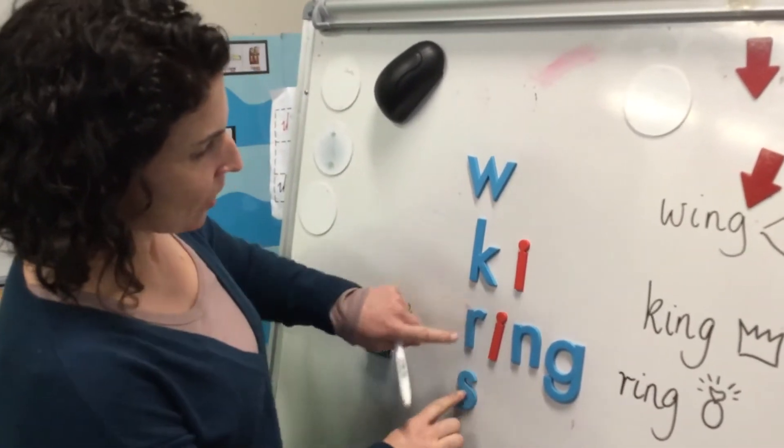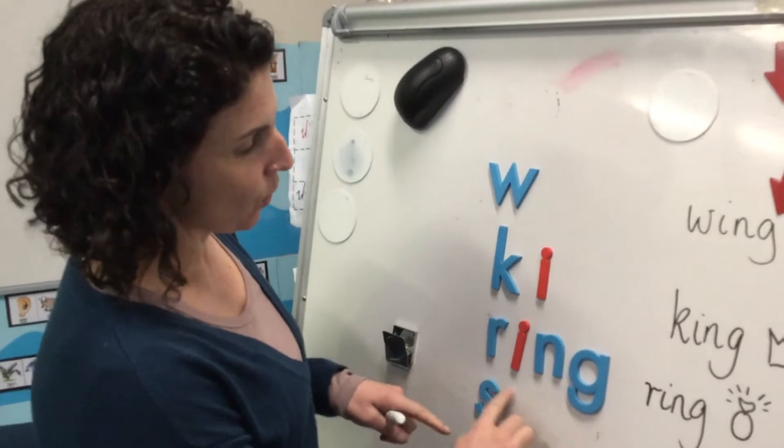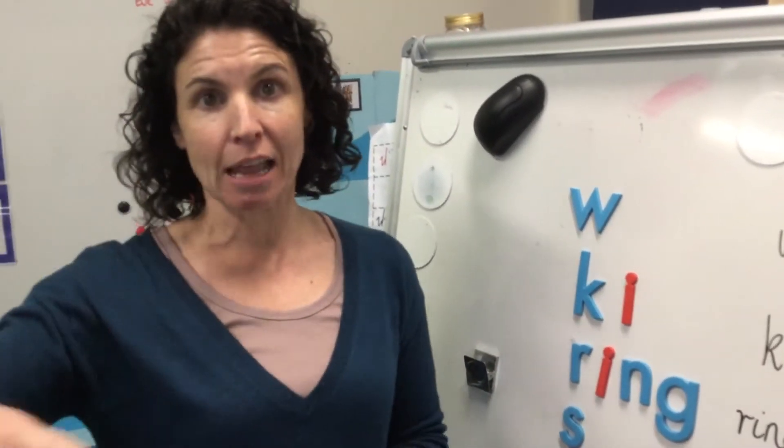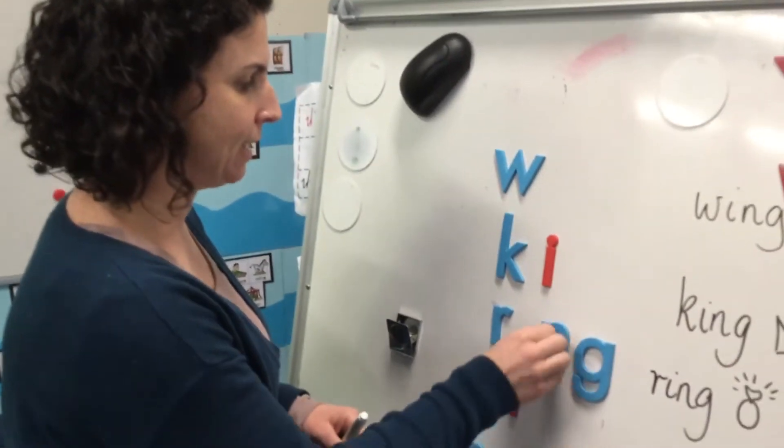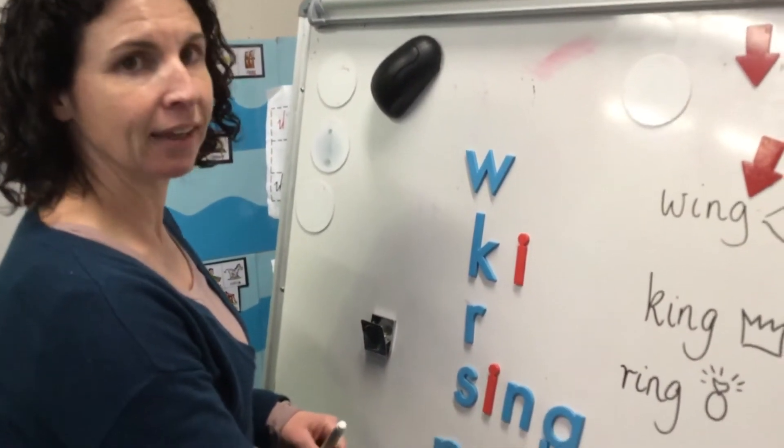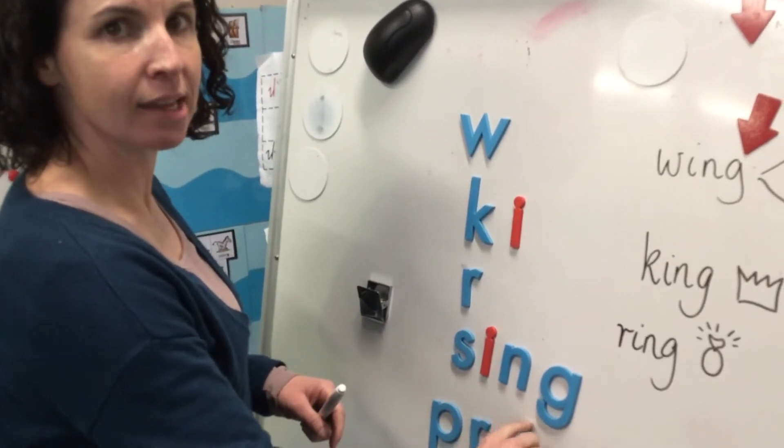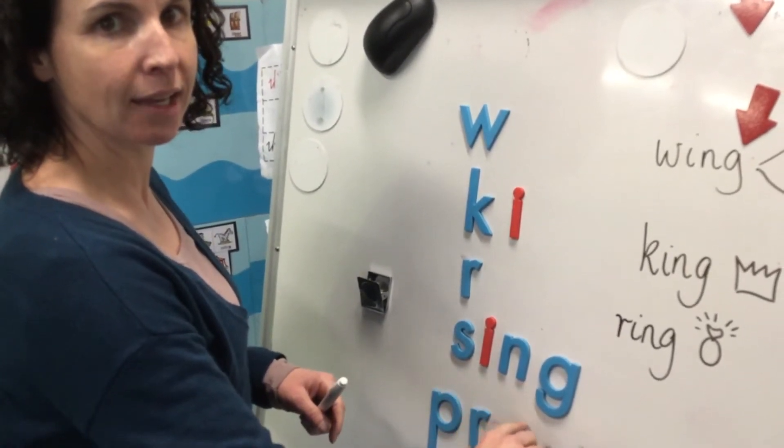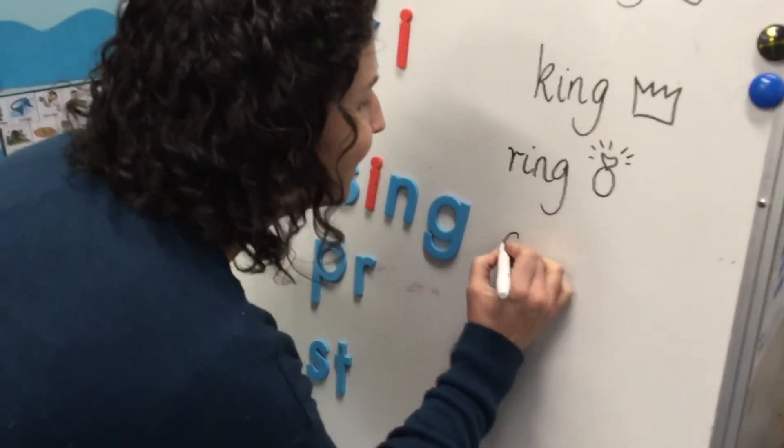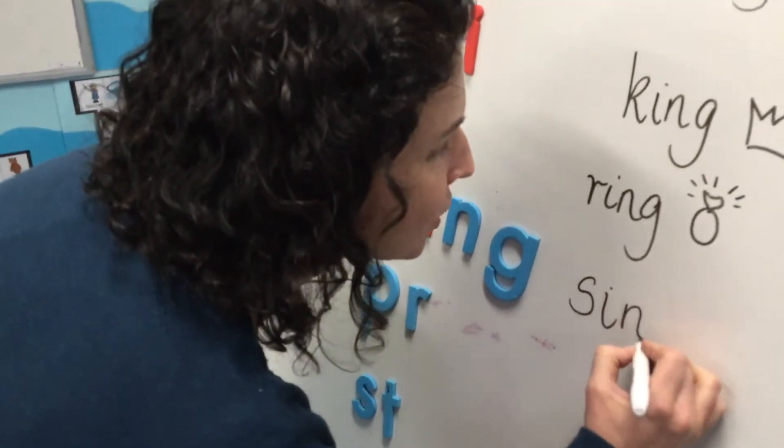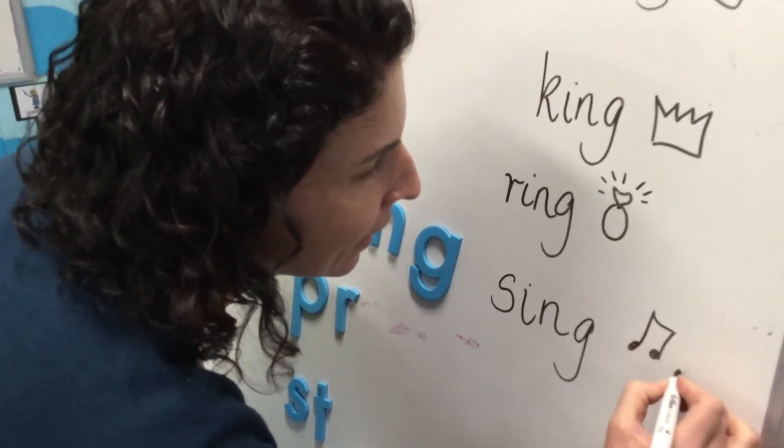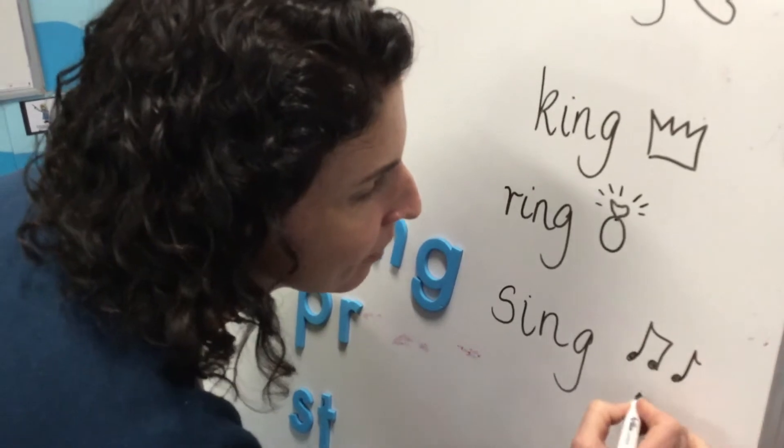Okay, now we're going to change just that first sound again. We're still working with the ING word family. This time we've got an S in front. So I'm moving these down. S-ING. Sing. What's something you like to do in the mornings Mrs. Mack? And at lunchtime and in the afternoons and in the evenings and just before bed. I sing and often annoy my family.